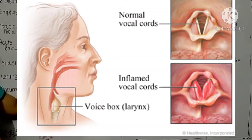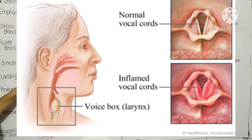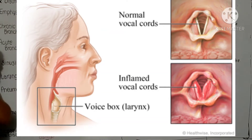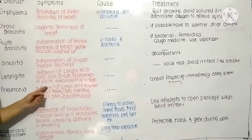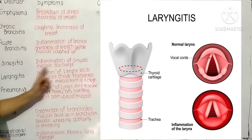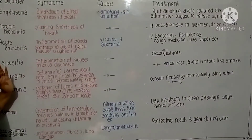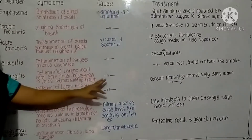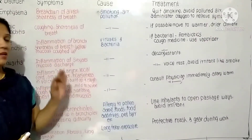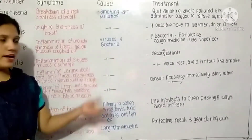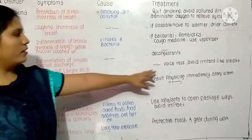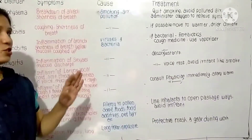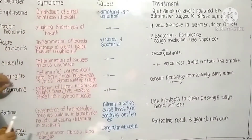The next disorder is laryngitis — inflammation of the larynx as well as the vocal cords, since the larynx is internally lined by the vocal cords. Symptoms include a sore throat, hoarseness of voice, mucous buildup, and cough. It is caused by viruses and bacteria. If caused by bacteria, the person has to take antibiotics, and voice rest should be maintained while avoiding irritants like smoke.